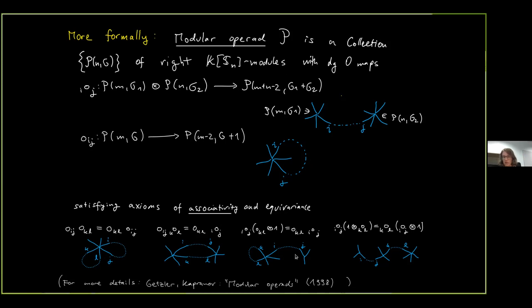These maps must satisfy axioms of associativity and equivariance. The associativity can be visualized in four pictures, and the equivariance is what you would expect. If you don't like this approach of maps on components, you can check the article of Kessler and Capron, which shows how to do this more categorically as an algebra over a monad — I think that version is more suitable for humans.